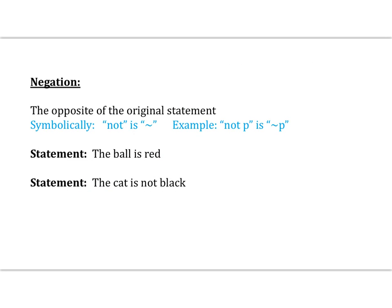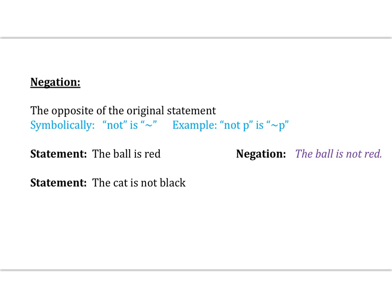Our next vocabulary word is negation, which means the opposite of the original statement. Symbolically, we say 'not,' represented by a little wavy bar — for example, not P is written as wavy-bar P. Let's take the following statements and negate them. The first statement is: the ball is red. The opposite is: the ball is not red. For the next statement, the cat is not black — the negation is: the cat is black. Negate simply means to say the opposite of the original.